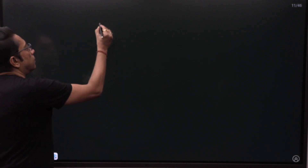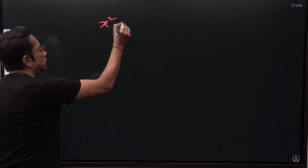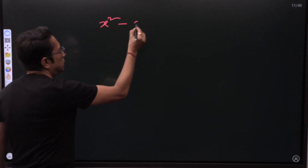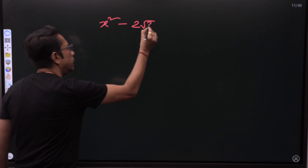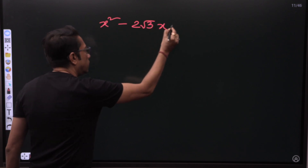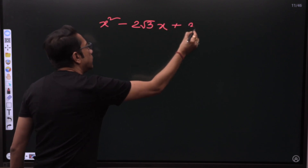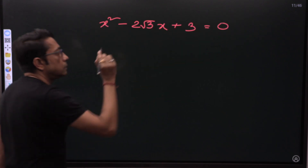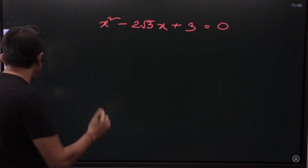Let us move on to an example. Suppose X squared minus 2 root 3 X plus 3 equals zero. This is our quadratic equation.